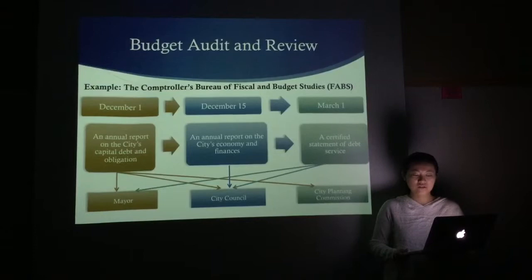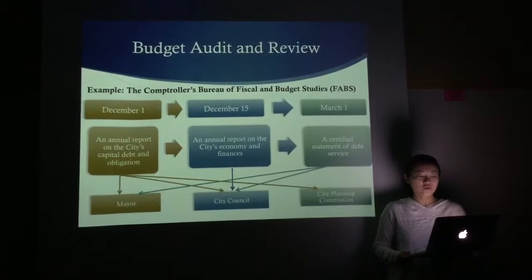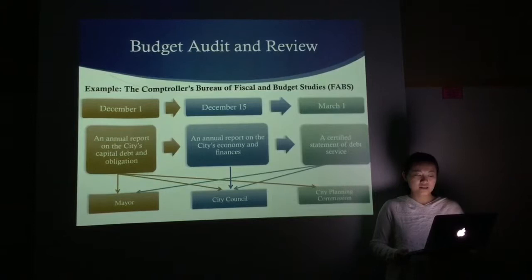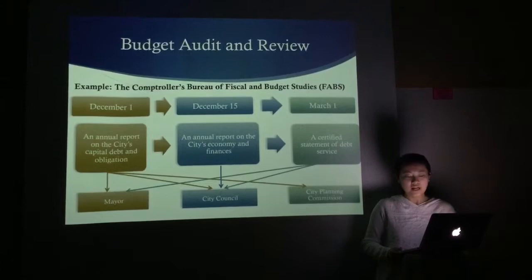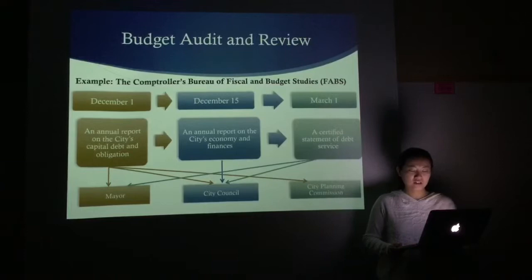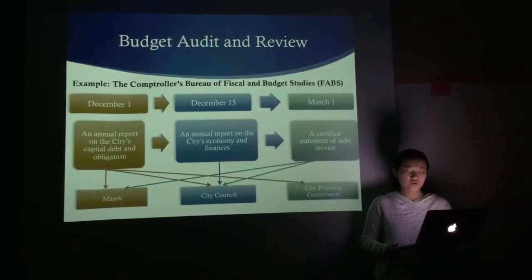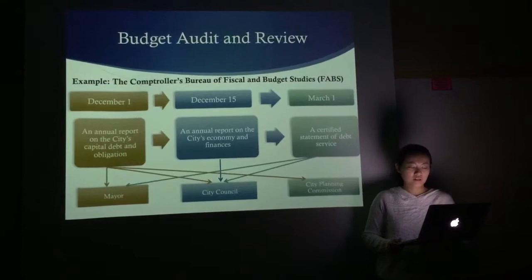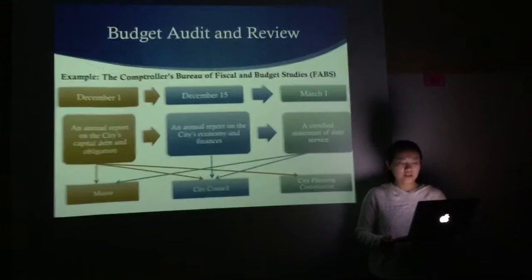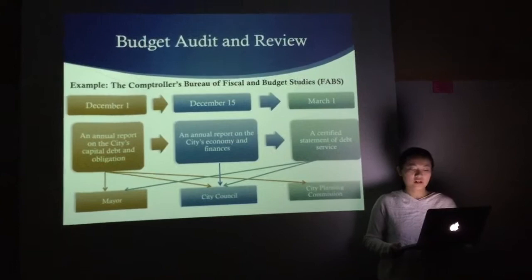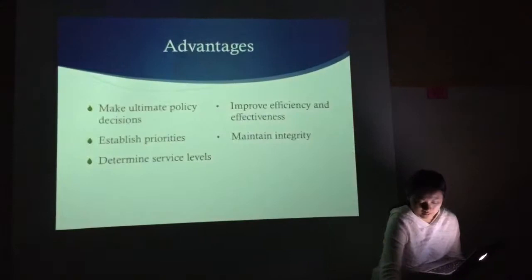FABS provides a number of specific reports and letter statements mandated by the city charter. These include: an annual report on the city's capital debt and obligations to the City Council, the mayor, and the city planning commission by December 1st, which examines the maximum amount of debt the city may incur in subsequent fiscal years and the indebtedness against the general obligation debt limit in the current and subsequent three fiscal years; an annual report to the City Council on the state of the city's economy and finance by December 15th; and by March 1st, the controller submits a certified statement of debt service to the mayor and City Council, which contains a schedule of debt service appropriations for the subsequent fiscal year.